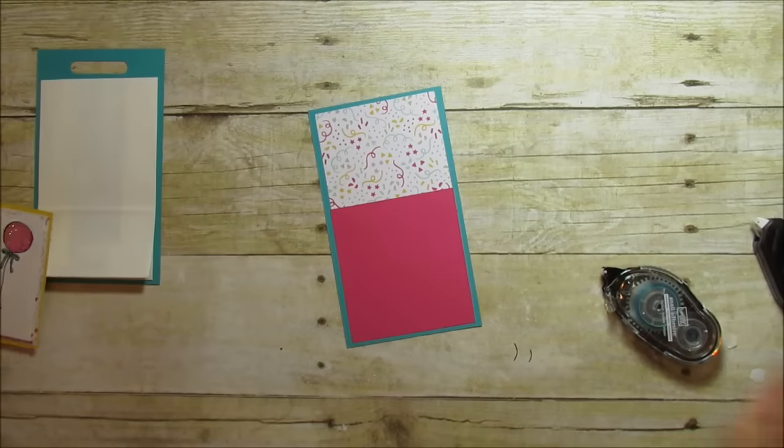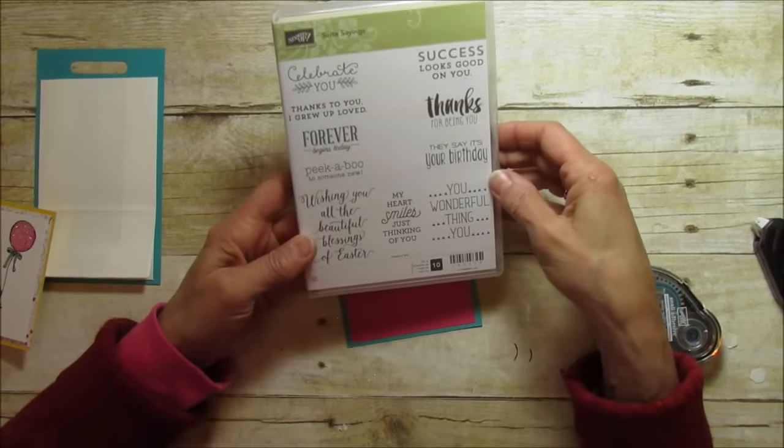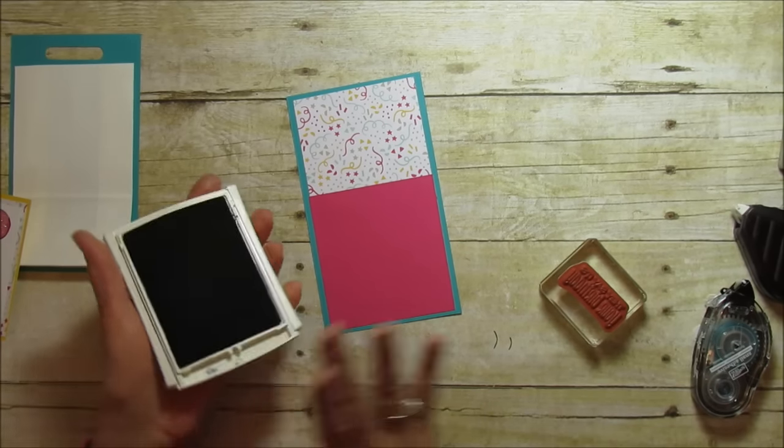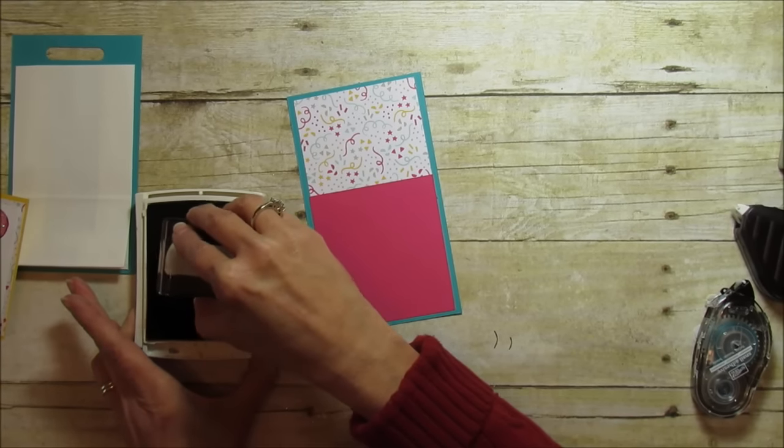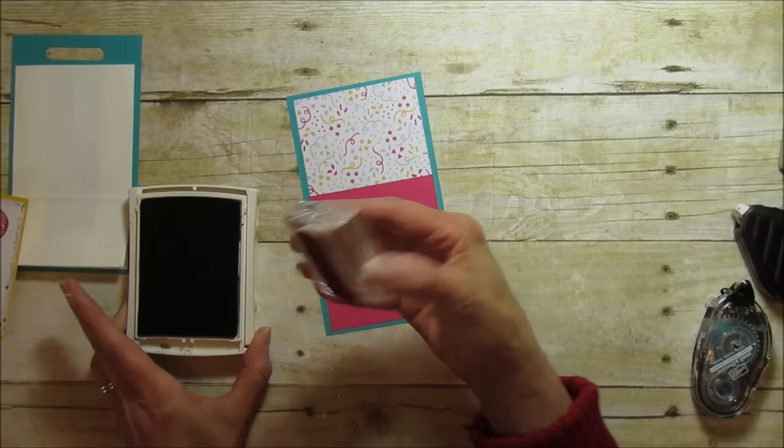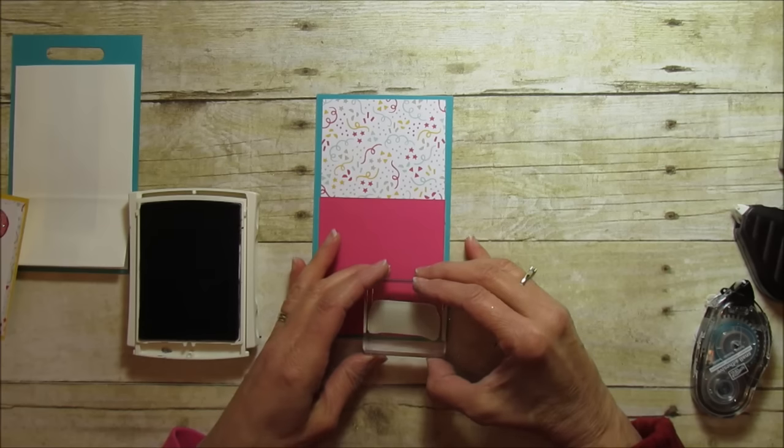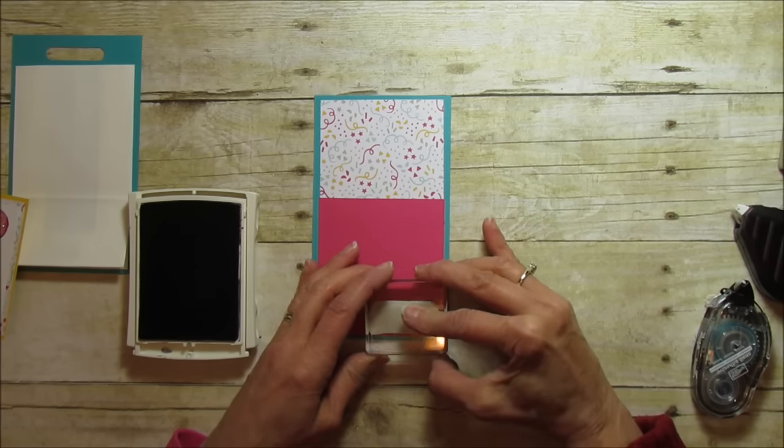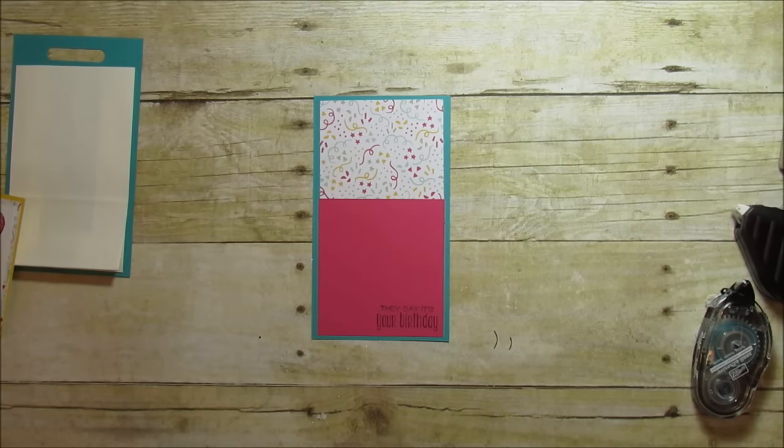And I'm going to go ahead and stamp our sentiment now. The sentiment is from a different stamp set, it's the Sweet Sayings. I'm going to again use my Stampin Up archival black and this one says 'They say it's your birthday' and I love that, that's one of the Beatles songs, probably showing my age here. So I'm going to try to line it up straight and I did pretty good there. I love that saying, it's really cute.